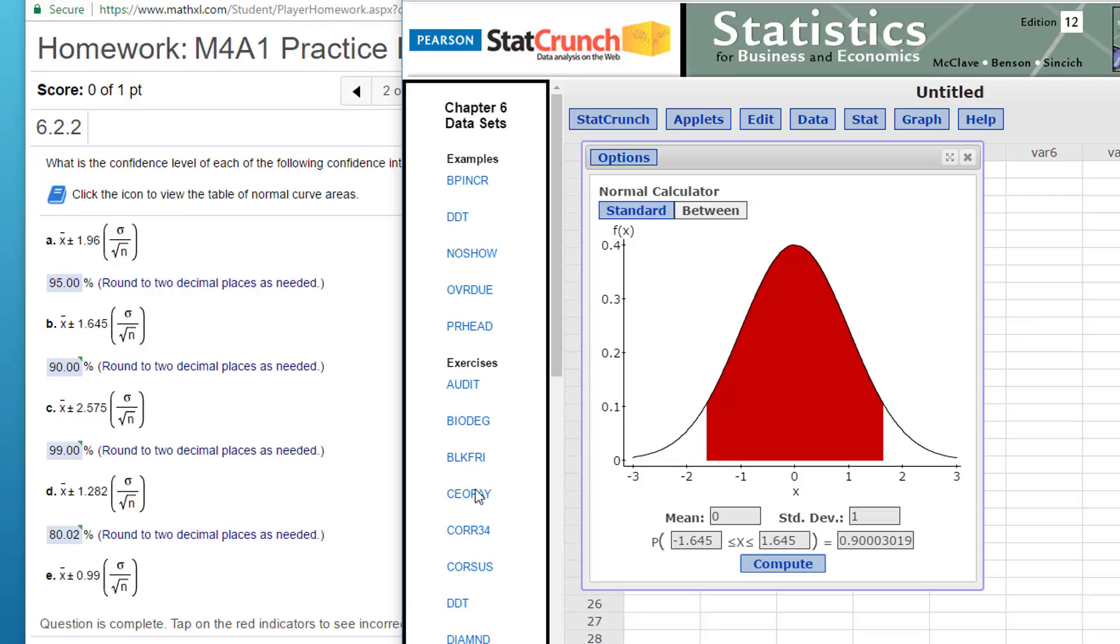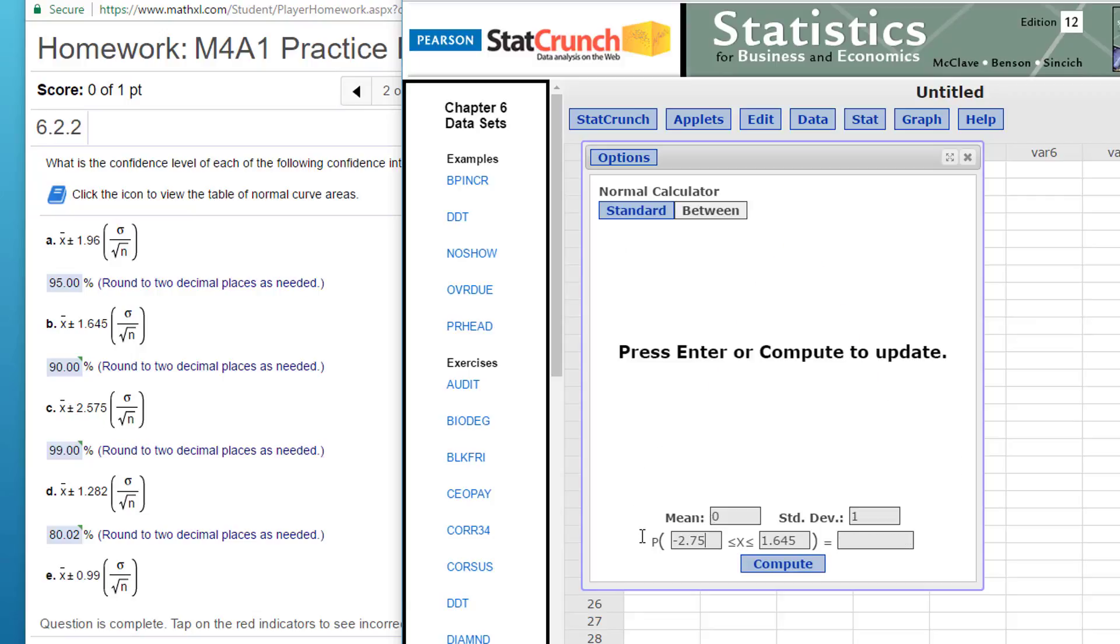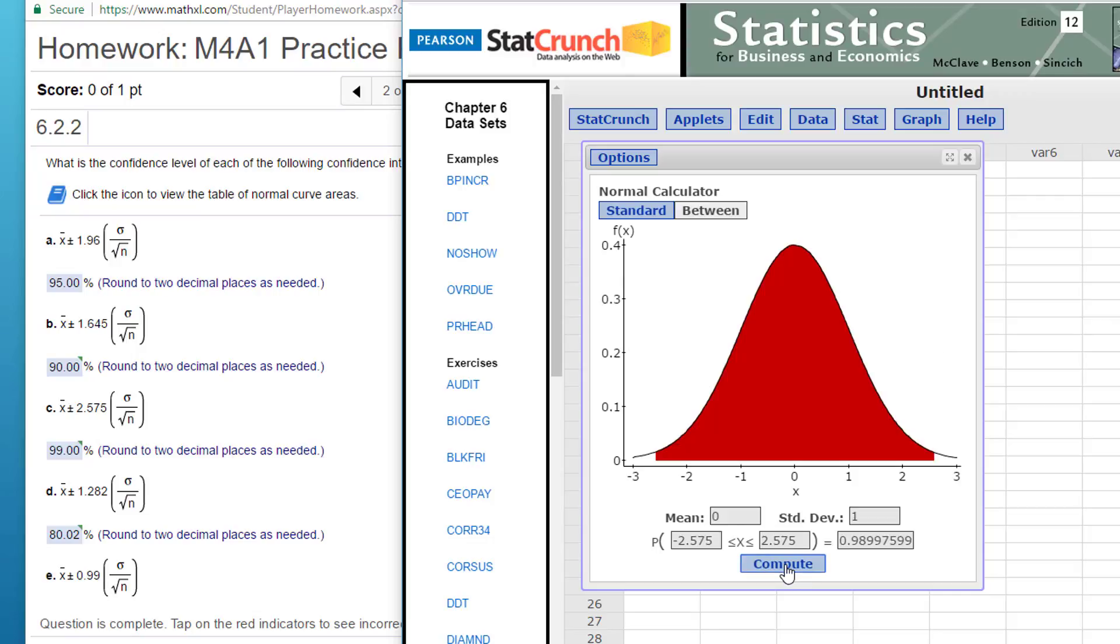The third one is 2.75 minus 2.75 plus 2.575. Click on compute. That's a 99% confidence interval around the two decimal places.